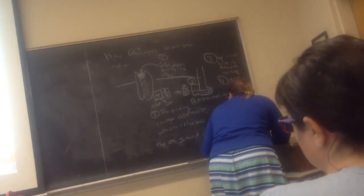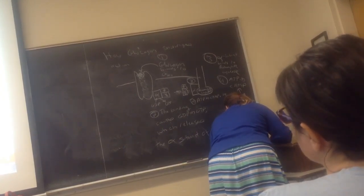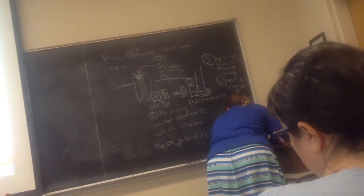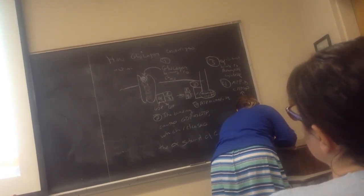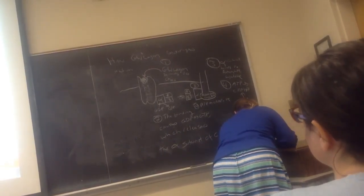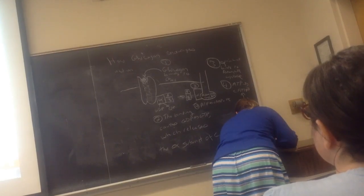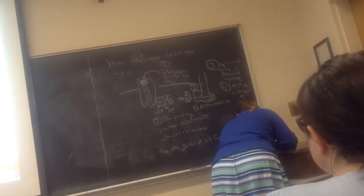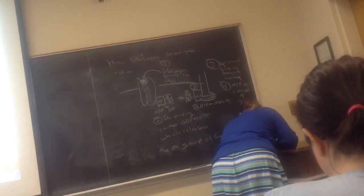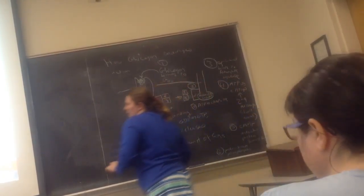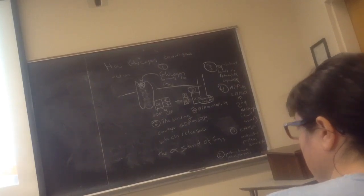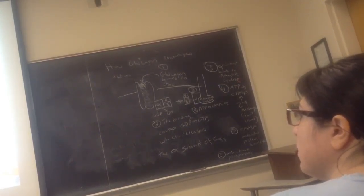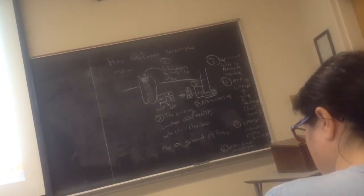And then number six, what does protein kinase A do? Protein kinase A phosphorylates stuff. Let's go back to our diagram. There we go.